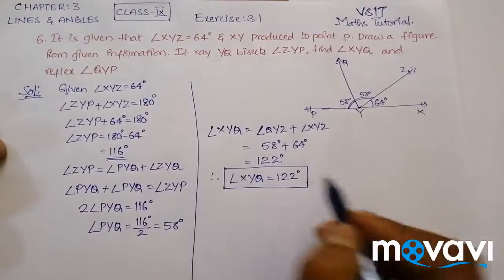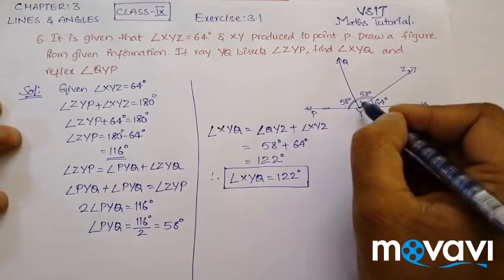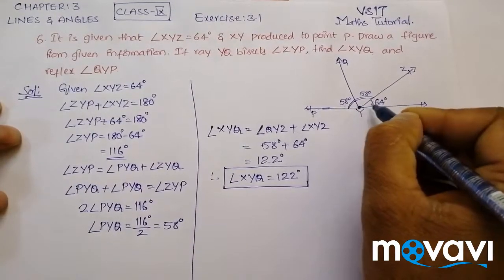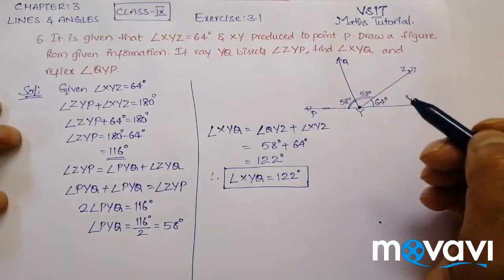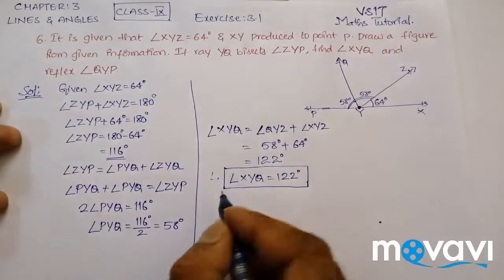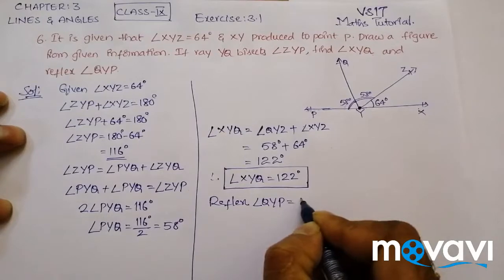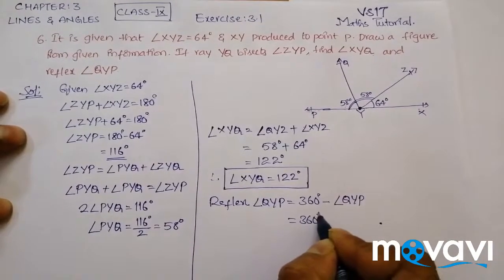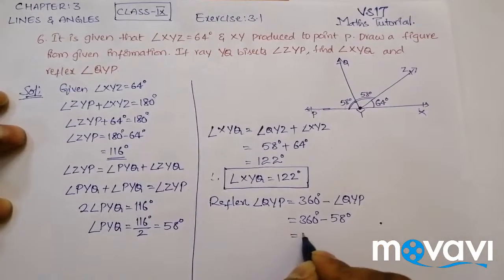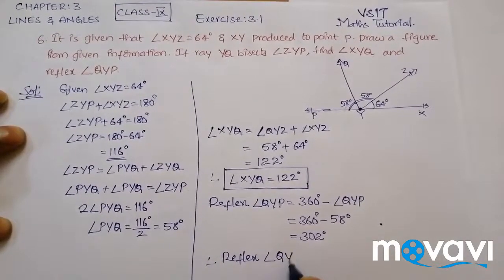They also asked for the reflex of Angle QYP. At point Y, the total angle is 360 degrees. So reflex Angle QYP equals 360 degrees minus Angle QYP. That is 360 degrees minus 58 degrees, which equals 302 degrees. Therefore, reflex Angle QYP is equal to 302 degrees.